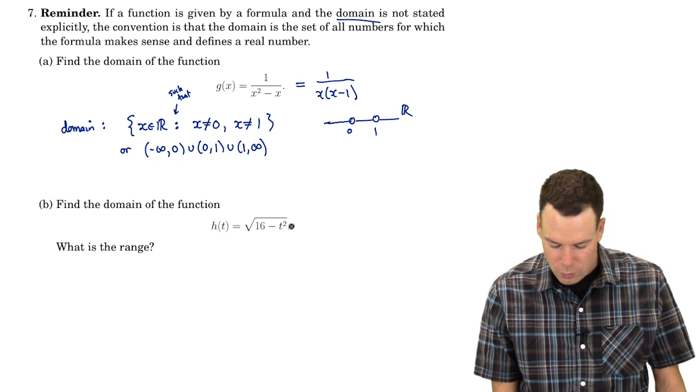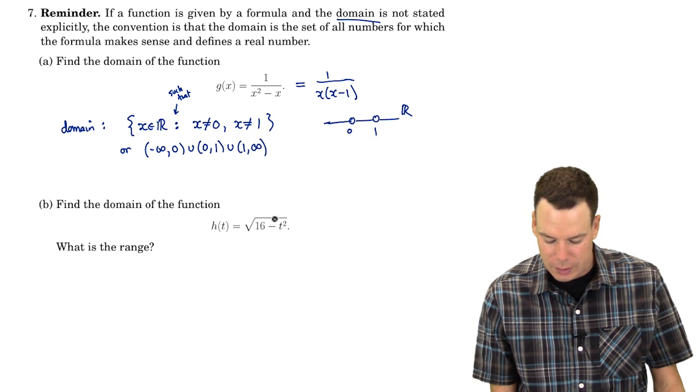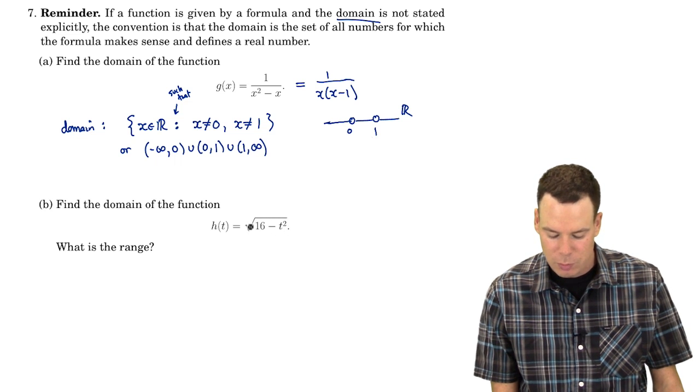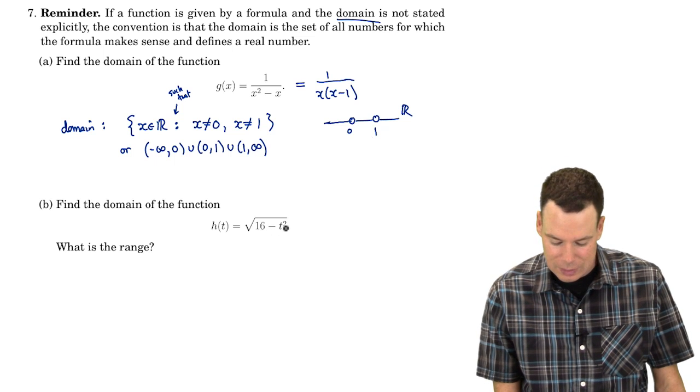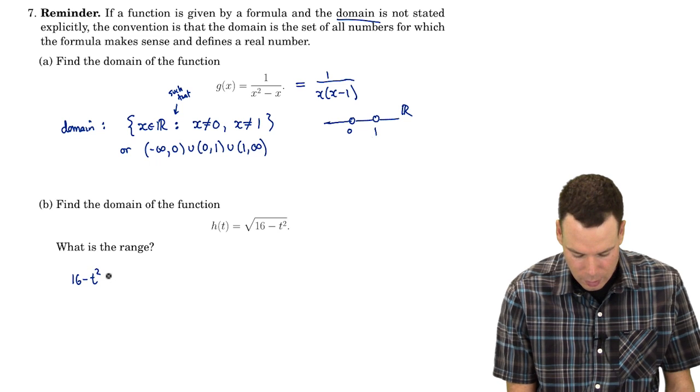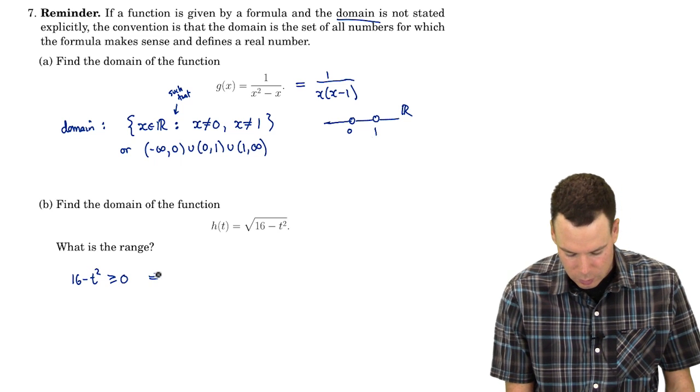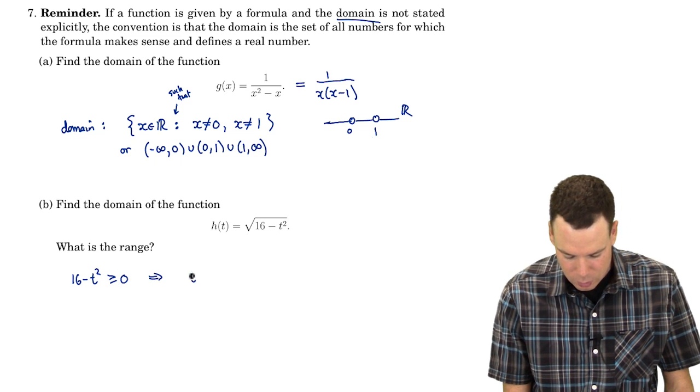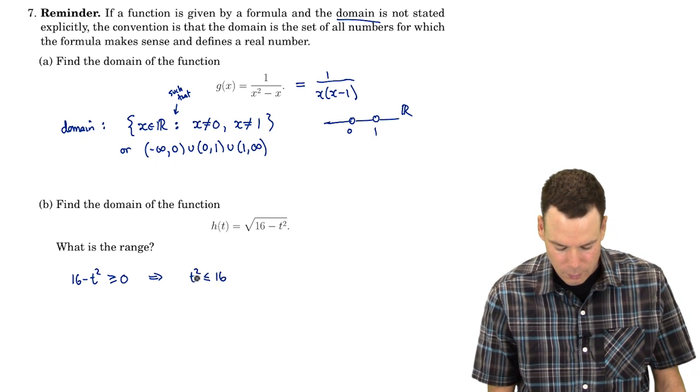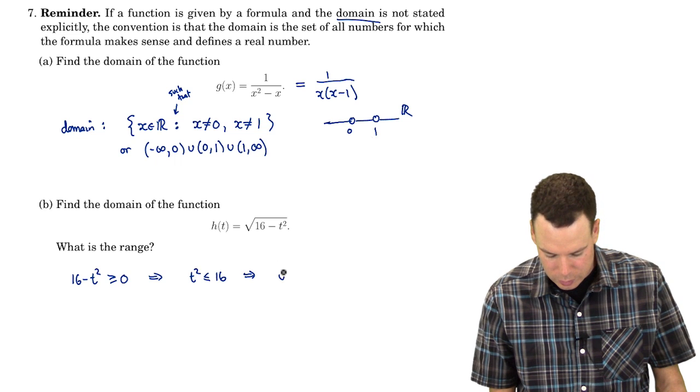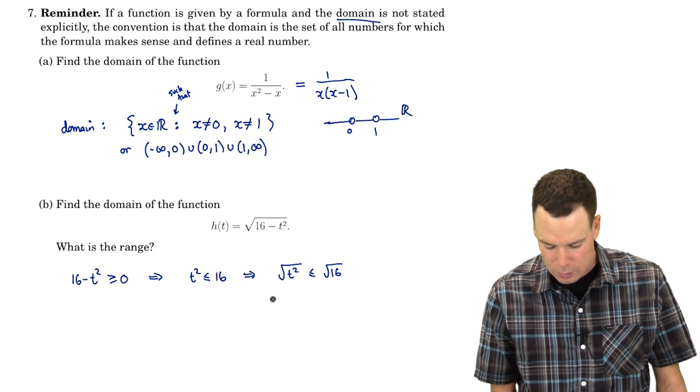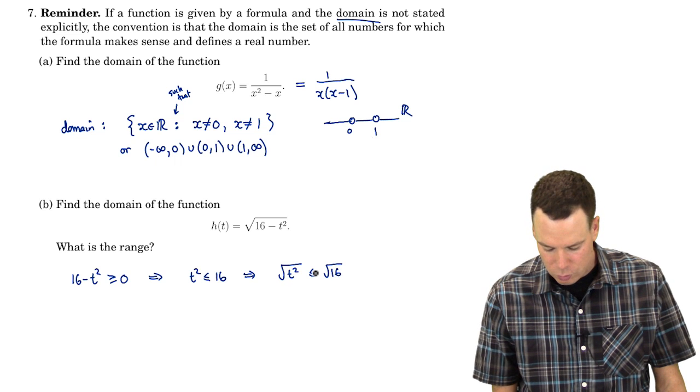For a value of t to make sense, I need to make sure that 16 - t² can be square rooted, so 16 - t² must be positive. Therefore, 16 - t² ≥ 0, or in other words, t² ≤ 16.